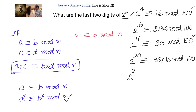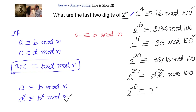That equals 2 power 20 congruent to 576 modulo 100. Since 2 power 20 and 576 leave the same remainder when divided by 100, and we are interested only in the last two digits, we can write: 2 power 20 and 76 are congruent modulo 100. What we want is 2 power 22.